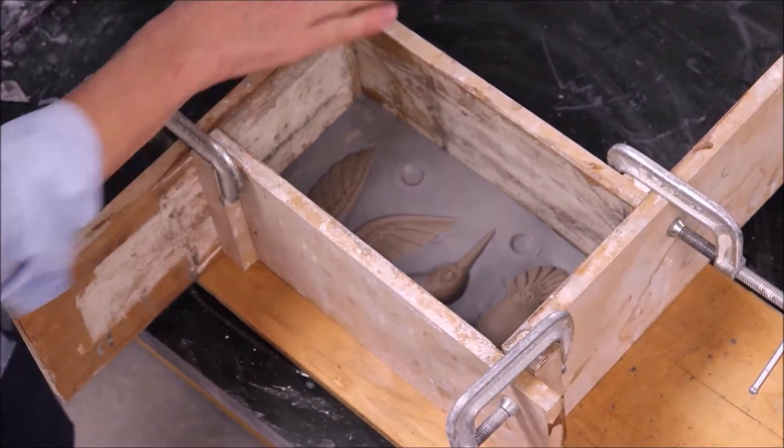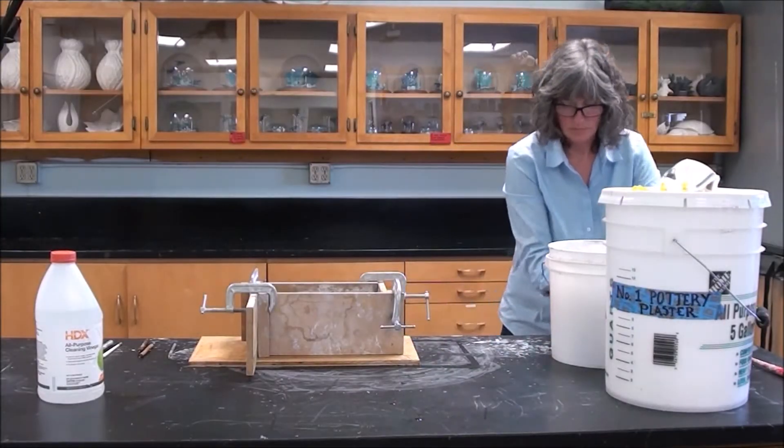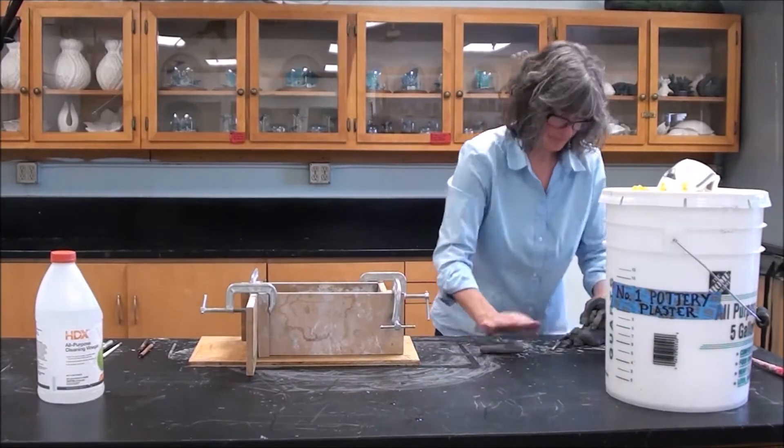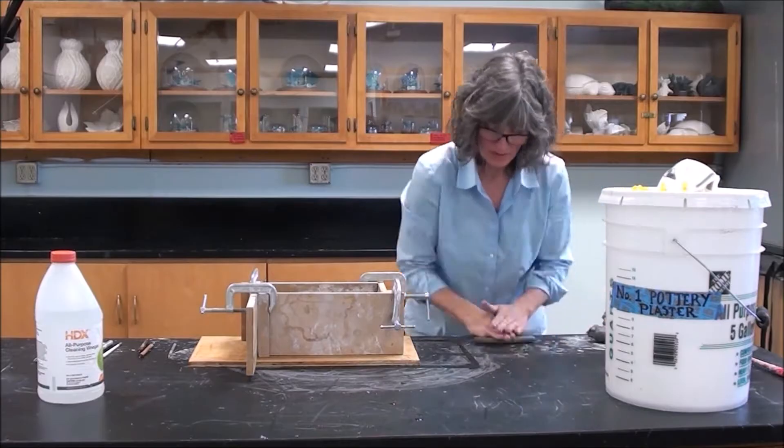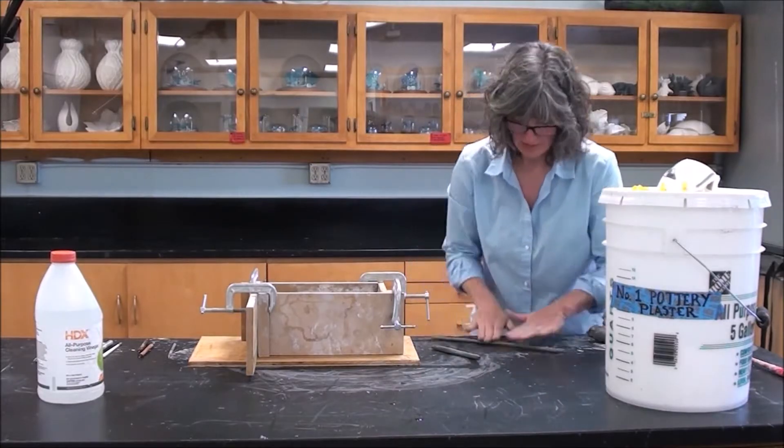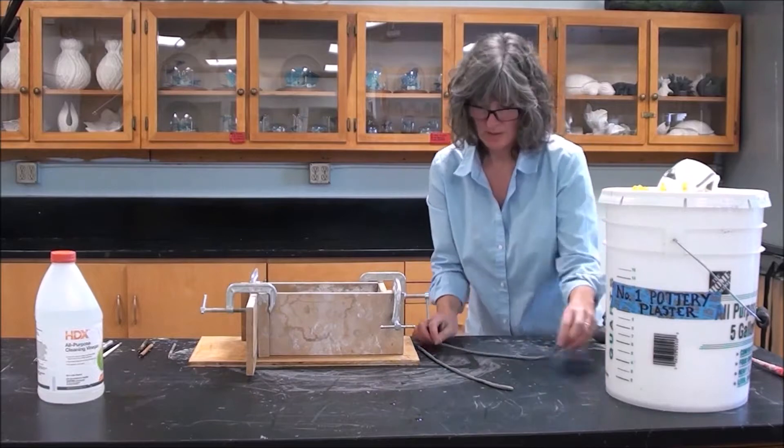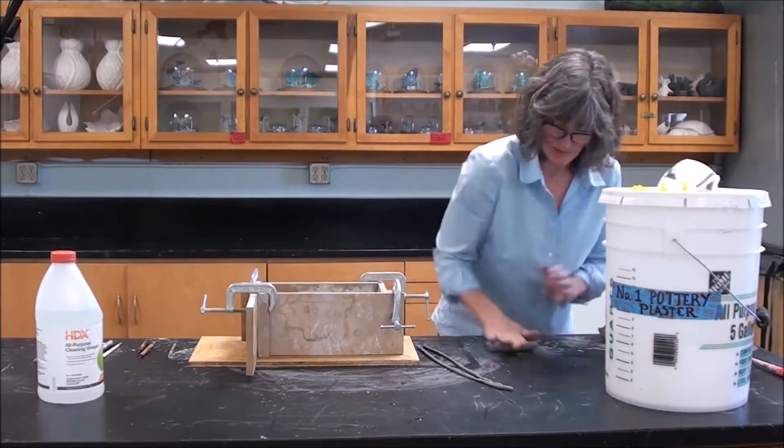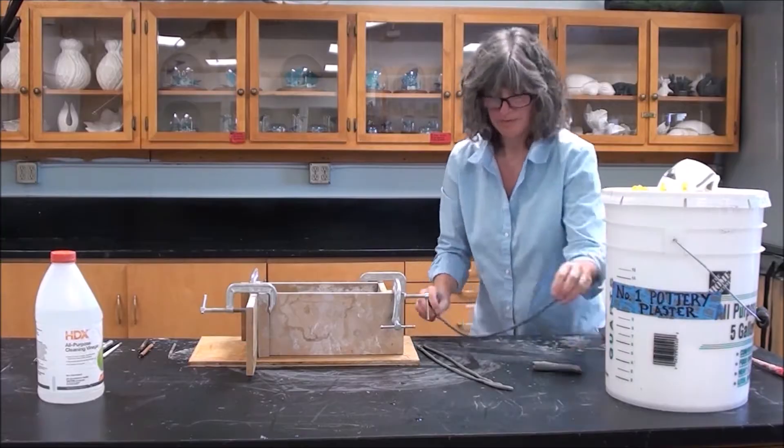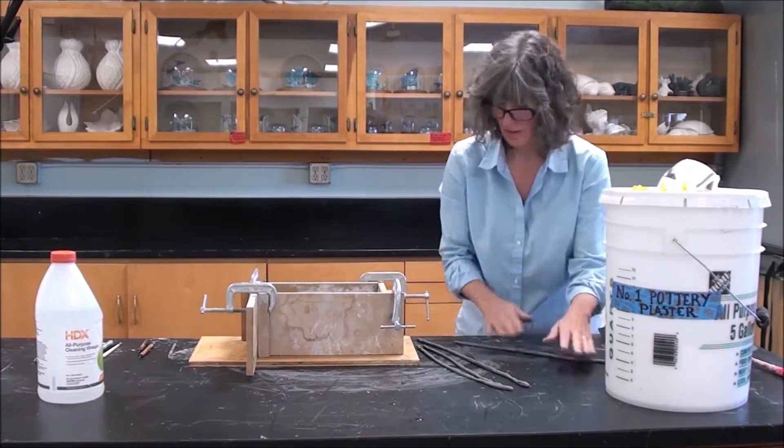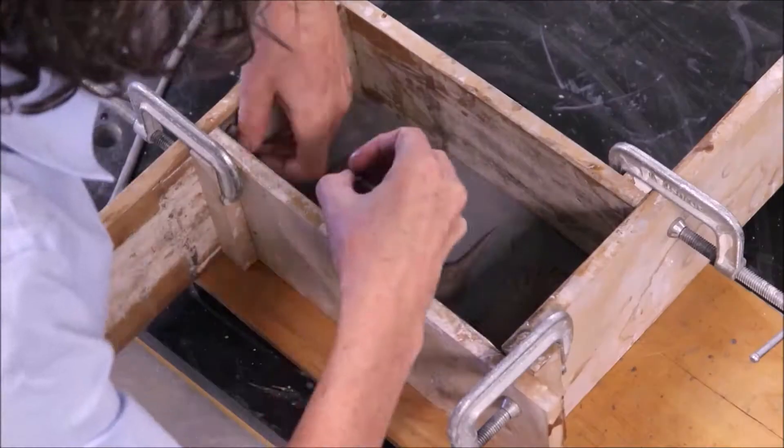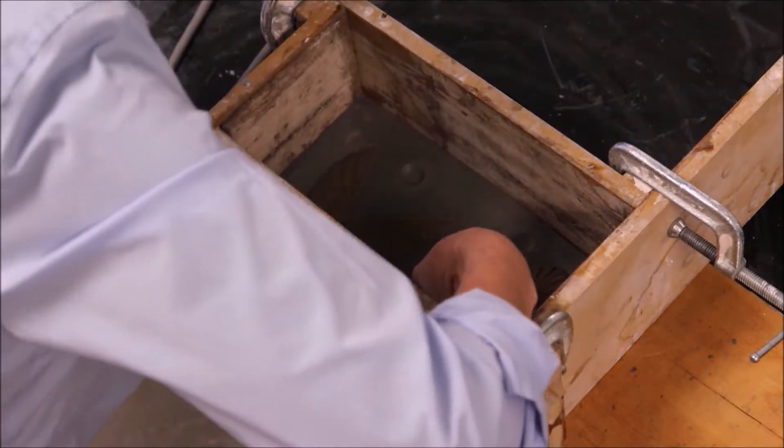You don't want to use Plaster of Paris. I've made a mold before out of Plaster of Paris, and it doesn't really work very well. The Plaster of Paris is much too dense of a material, doesn't make a very good sponge, and it doesn't do a very good job at all of sucking the water out of the slip and turning it into a clay wall. So you could use Plaster of Paris, but it is not going to work very well for slip casting.